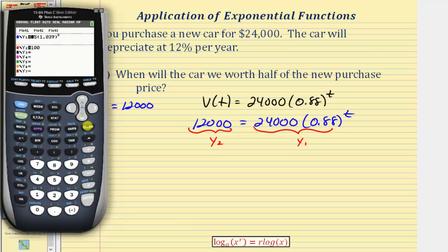So y equals, clear out the old functions. Enter the new function, so 24,000 times 0.88 raised to the power of x in y1, enter. And y2 will be 12,000, enter.